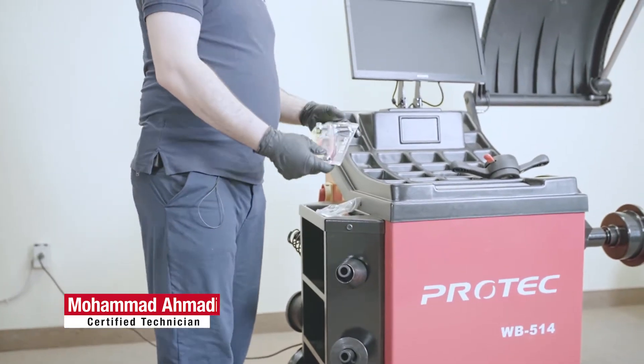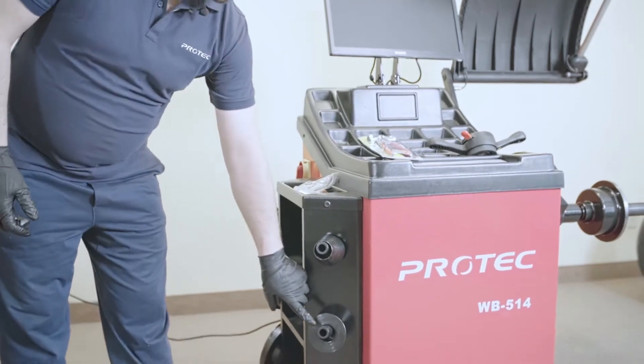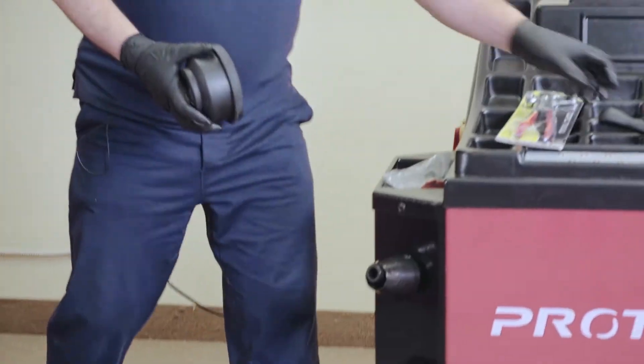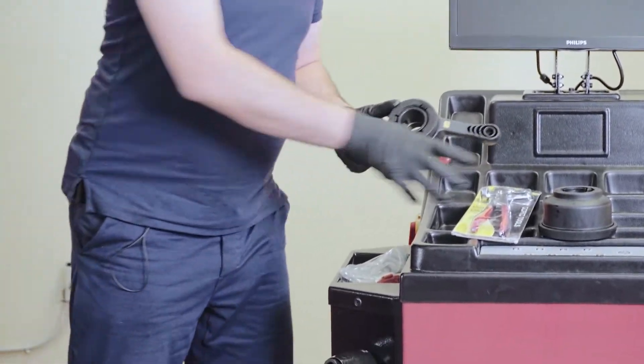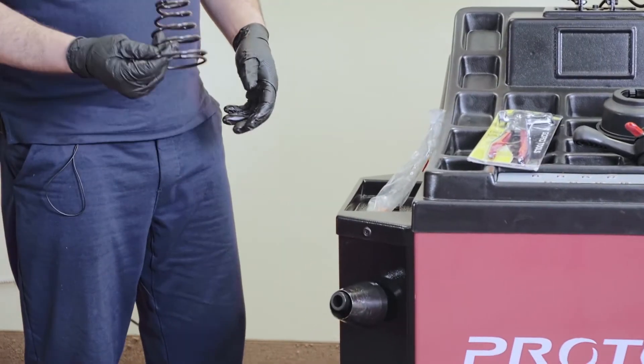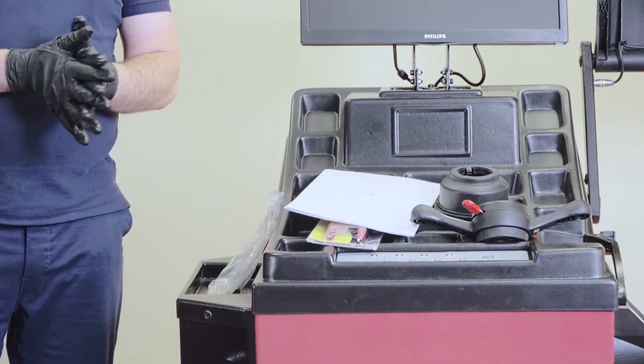First we're going to show you what the machine comes with. You have a truck adapter, a quick nut with a flange or cup, calibration wing and spring, and the manual. That's all that comes with the machine.